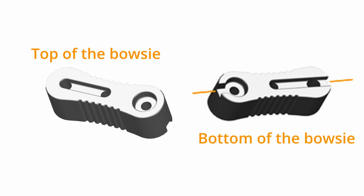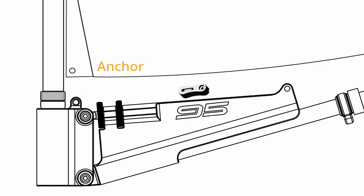To tie a Bowsie first establish which way round it should go. Bowsie has a top side and a bottom side, an anchor side and a load side.